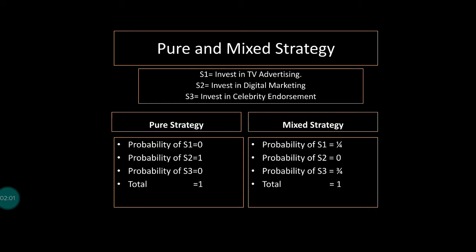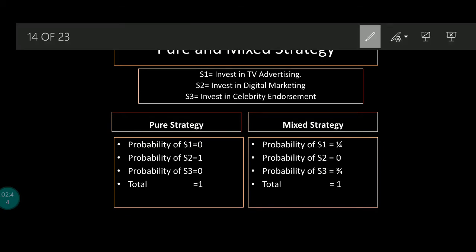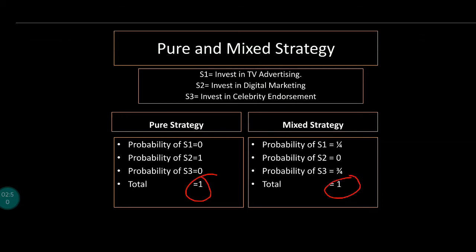In mixed strategy, take the Colgate example again. In the introductory stage of the product life cycle they use S1, TV advertising, but towards the growth and maturity stage they also use S3, celebrity endorsement. So they adopt both S1 and S3, where the probability of S1 is one-fourth and the probability of S3 is three-fourths. In both pure and mixed strategy, the total probability of the game is always one.